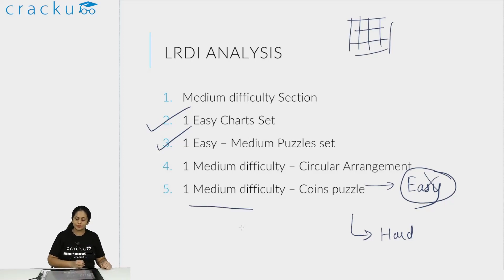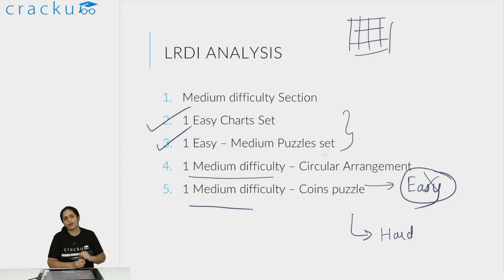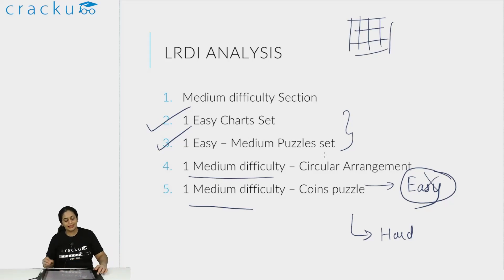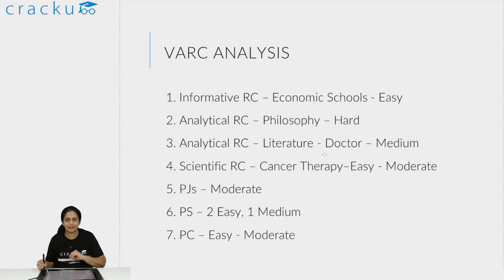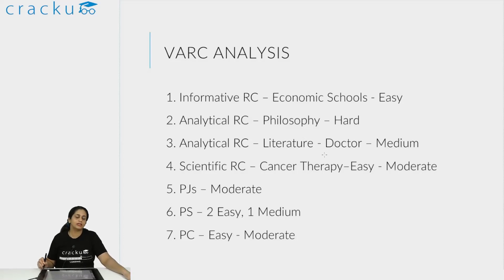That is why it is a medium difficulty set. The circular arrangement is exactly medium difficulty. Both - the circular arrangement and the coins puzzle - I feel are CAT difficulty sets; the chart and puzzle sets were slightly easier than CAT. Overall I felt the LRDI section was also on the easier side - this is something where you should have actually scored well.